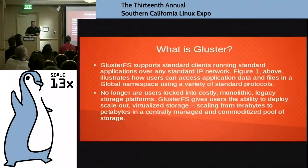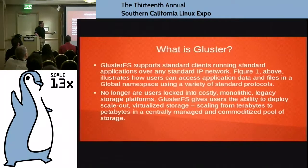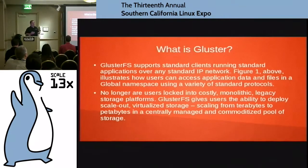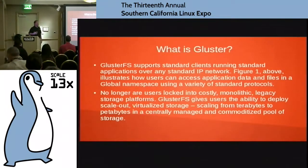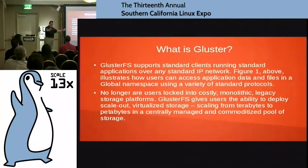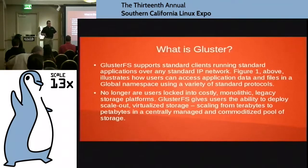GlusterFS supports standard clients running standard applications over any network — any IP or RDMA network. Users can access application data and files in a global namespace. It is really fast when you distribute across multiple machines using a native Gluster client, because essentially you're getting the same benefit we used to talk about with RAID — lots of writes across multiple spindles. Now we're doing lots of writes across multiple servers. Instead of RAID, I guess it's RAID: redundant array of inexpensive servers.